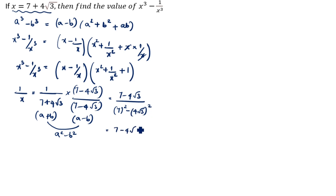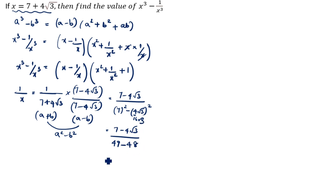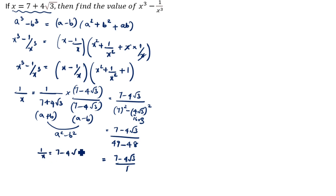So the denominator is 49 minus 16 into 3. 16 times 3 is 48. So 49 minus 48 equals 1. Therefore 1 by x equals (7 minus 4 root 3) divided by 1, which means 1 by x is equal to 7 minus 4 root 3.